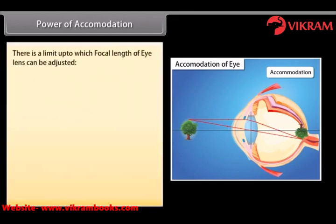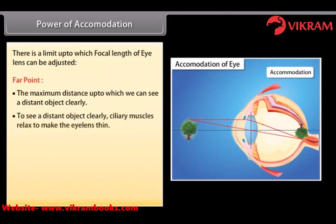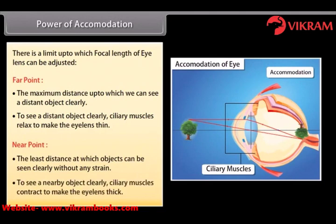There is a limit up to which the focal length of the eye lens can be adjusted. Far point — the maximum distance up to which we can see a distant object clearly. To see a distant object clearly, ciliary muscles relax to make the eye lens thin. Near point — the least distance at which objects can be seen clearly without any strain. To see a nearby object clearly, ciliary muscles contract to make the eye lens thick.